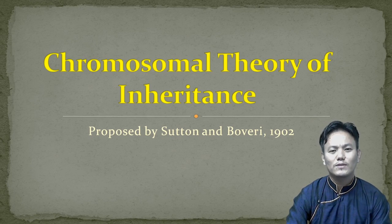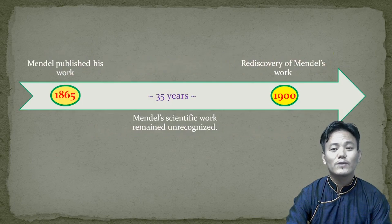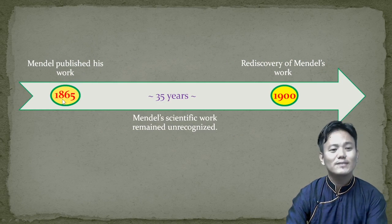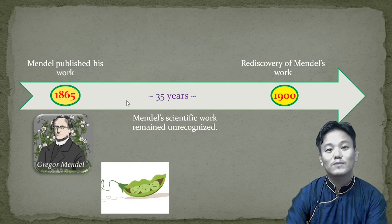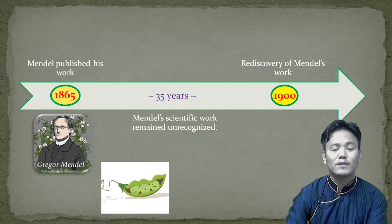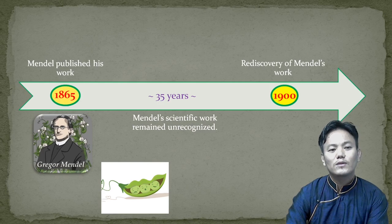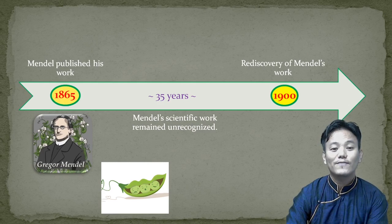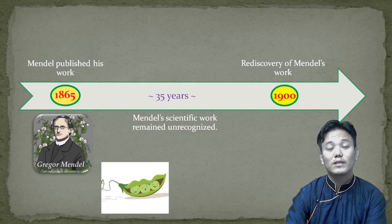Let's take a look at this timeline. In year 1865, Mendel published his work regarding his hybridization experiments with pea plants. He wrote about the law of dominance, law of segregation, and law of independent assortment. However, due to some reasons we will discuss later on, his work went unrecognized. He didn't become famous when he was alive and he died in 1884. For 35 years his work went unrecognized, but in year 1900, Gregor Mendel's work was rediscovered.